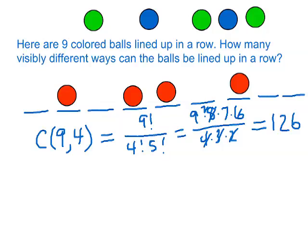Let's position the blue balls. Let's say we put a blue ball right here and a blue ball right there. So we have chosen two of those five spots for blue balls. How many different ways could we do that?